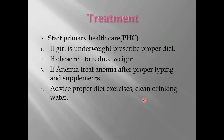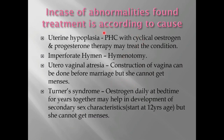Advise proper diet, exercises, and clean drinking water — these are included in primary health care. If abnormalities are found, treatment is according to cause. For uterine hypoplasia, cyclical estrogen and progesterone therapy is started. If it is imperforate hymen (cryptomenorrhea), the patient has to undergo hymenotomy under short GA — the hymen is cut and an opening is made.